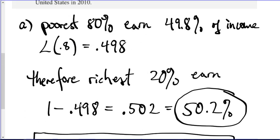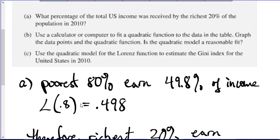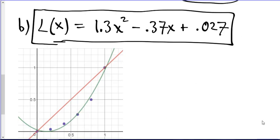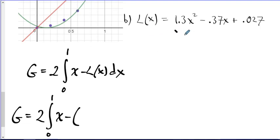And now moving on to part c, use the quadratic model for the Lorenz function to estimate the Gini index for the U.S. in the year 2010. So for this last part, we can use this Lorenz curve that we just found. And we're really finding the area between the Lorenz curve and y equals x, this area, and dividing by the area of the triangle to find G. In part b, I found this is the function, the Lorenz curve here.